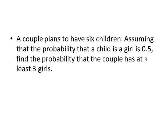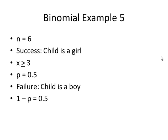Moving on. A couple plans to have six children. Assuming that the probability that a child is a girl is 0.5, find the probability that the couple has at least three girls. So we're looking for the probability of at least three girls, x greater than or equal to three, out of six children. That's our value for n. And we know that the probability that a child is a girl is given as 0.5. That's our value for p. Here we have a couple of choices by hand. We could start at three and add our way up through six, or we could use the complement, which is from zero through two.